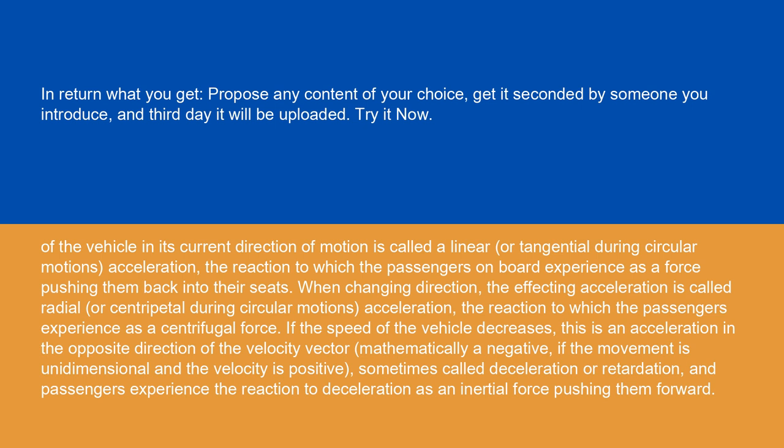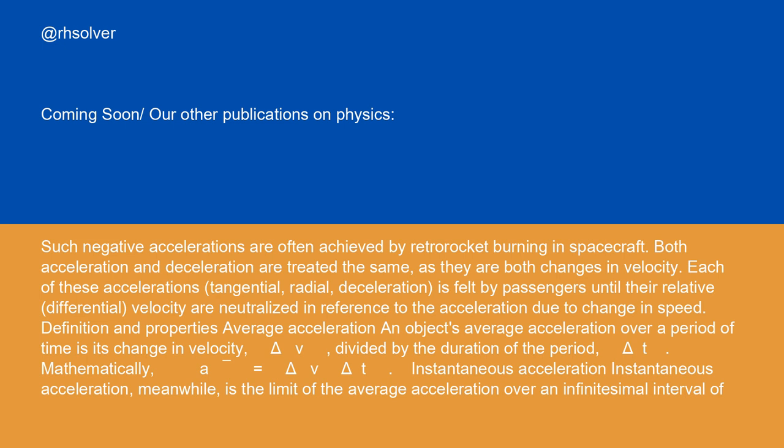This acceleration is the reaction to which passengers on board experience as a force pushing them back into their seats. When changing direction, the affecting acceleration is called radial or centripetal during circular motions, the reaction to which passengers experience as a centrifugal force. If the speed of the vehicle decreases, this is an acceleration in the opposite direction of the velocity vector — mathematically negative if the movement is unidimensional and the velocity is positive — sometimes called deceleration or retardation. Passengers experience the reaction to deceleration as an inertial force pushing them forward. Both acceleration and deceleration are treated the same, as they are both changes in velocity.